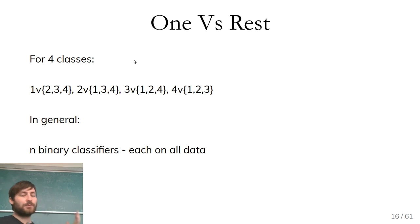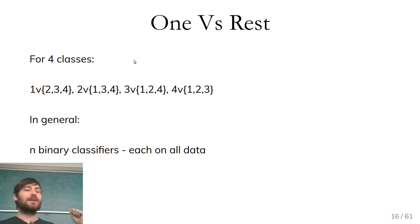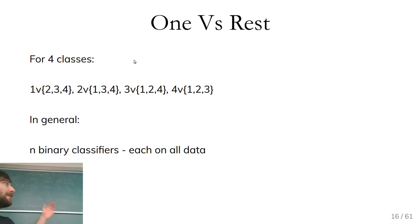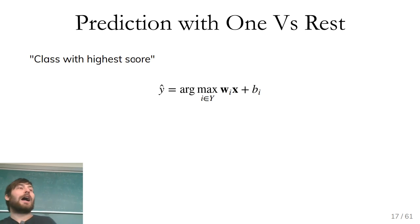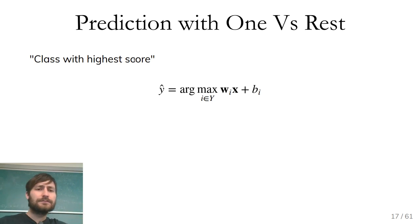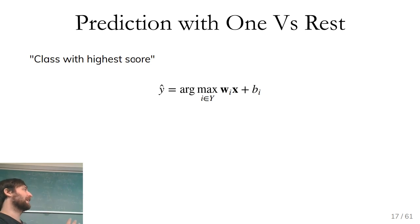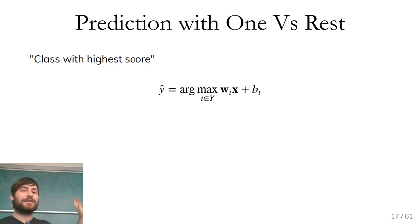One versus rest works as follows, assuming we have four classes: for each class, we build a binary classifier of this class versus the rest. We build one for class one versus the other three classes, one for class two versus the other three, and so on. So we have N binary classifiers, where N is the number of classes, each trained on the whole dataset. To make a prediction, we take a score from all classifiers. In the linear case this would be the decision function W_i transpose X plus B_i, where i goes over the different classifiers. We select the classifier with the highest score — that's the prediction.